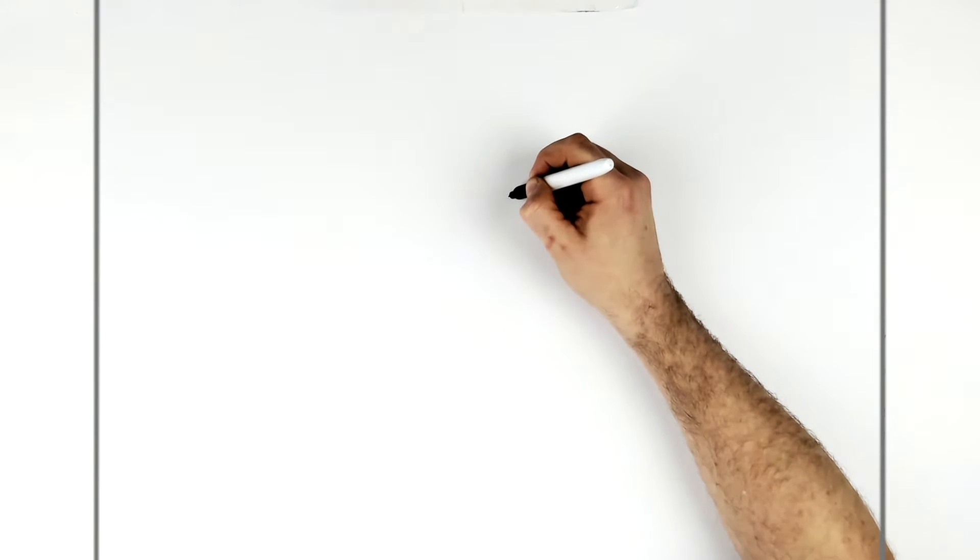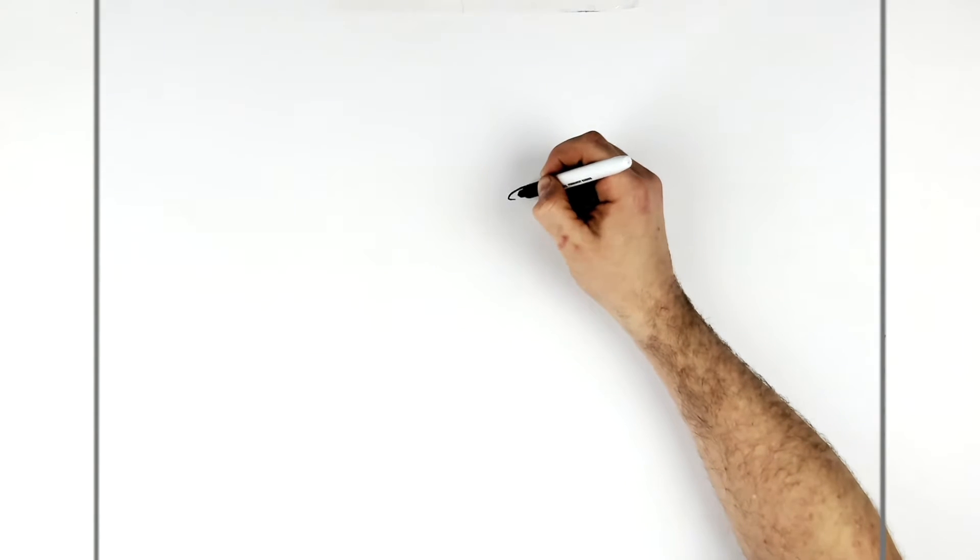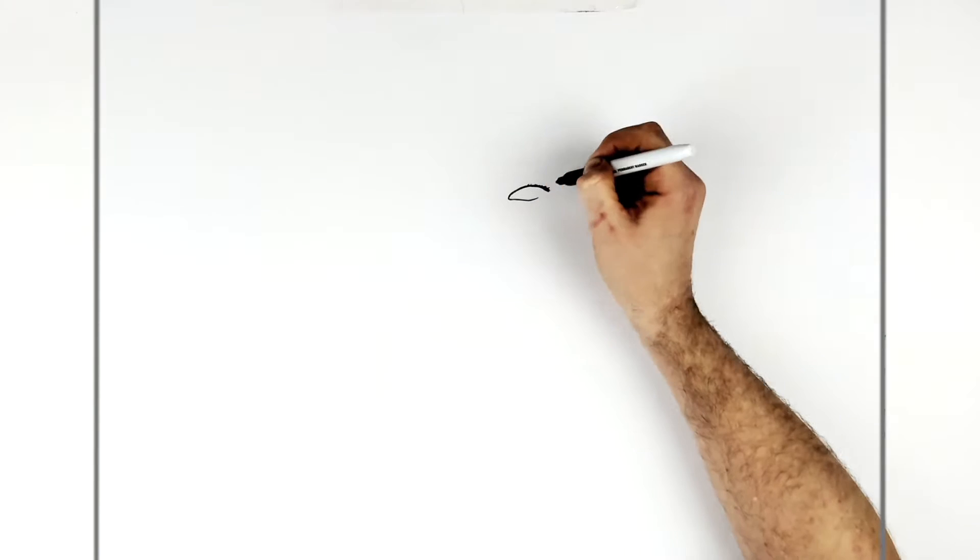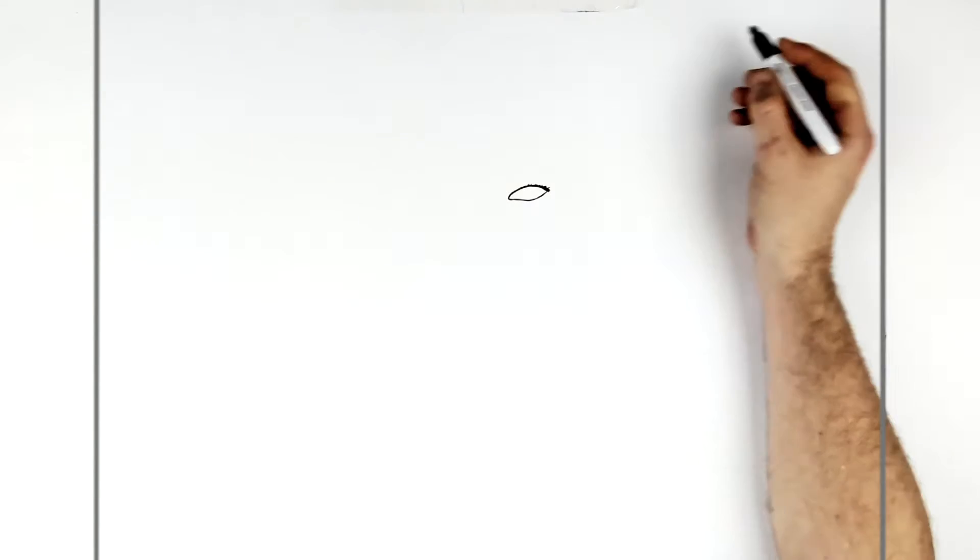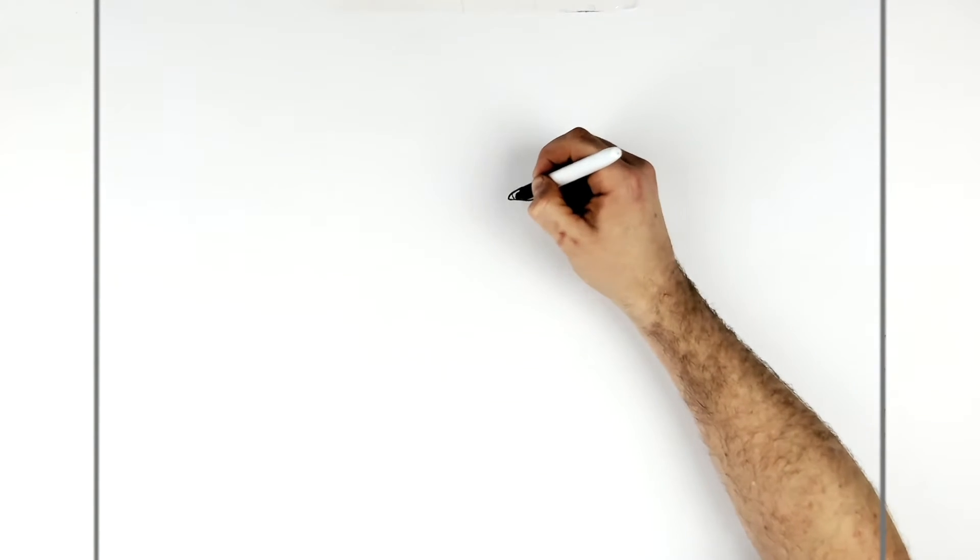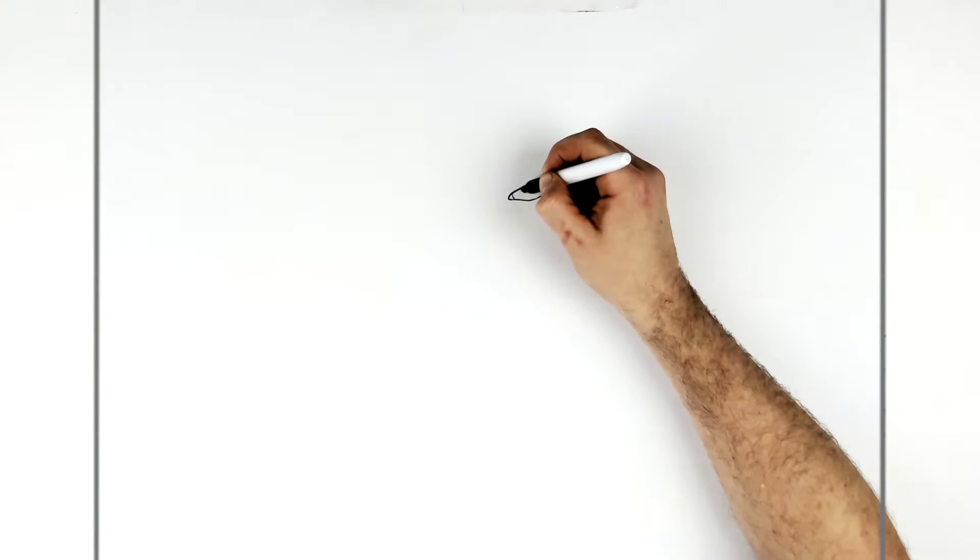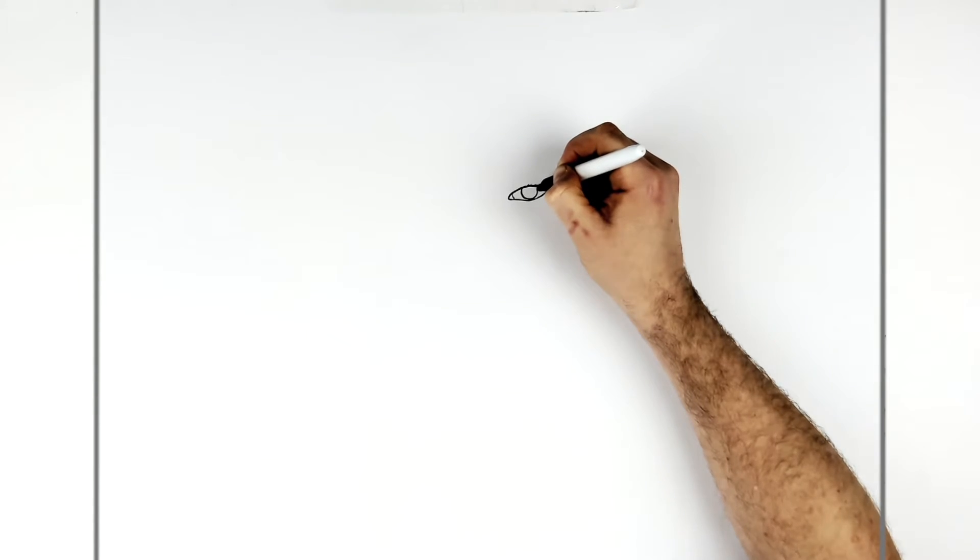And then his eyelid line for the tear duct, just there. Then we come around the bottom of the eye, up into there. And you can just see a line for his tear duct in there. So his iris circle comes down, pretty much touches the bottom eyelid, back up around there.